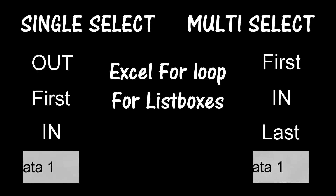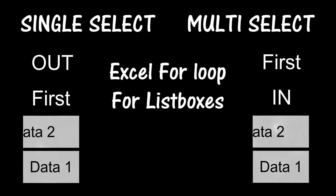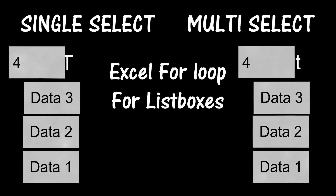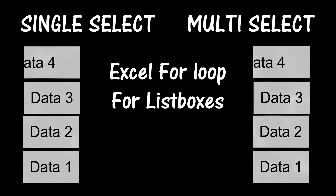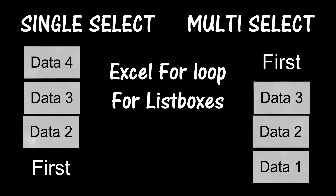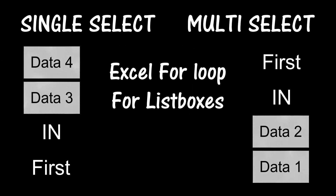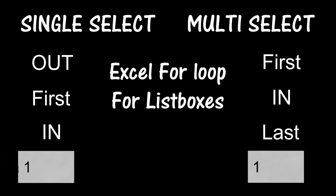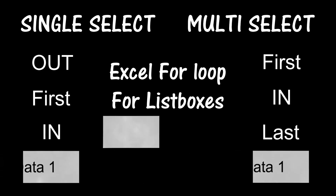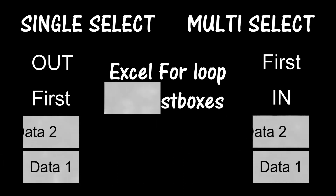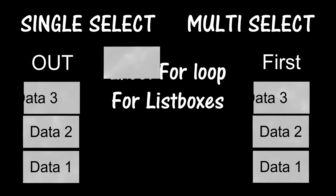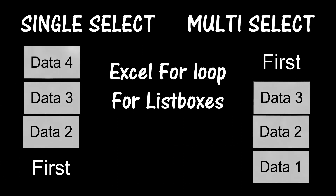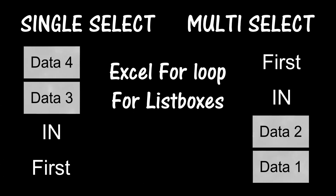The difference between the code necessary for a multi-select list box and a single select list box is that we will have to make two for loops in order to add and delete selected data from one list box to another. There are other ways to solve the problem, but we will do it with two for loops.